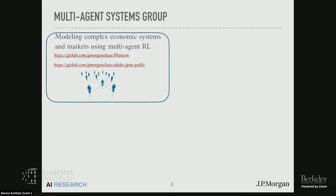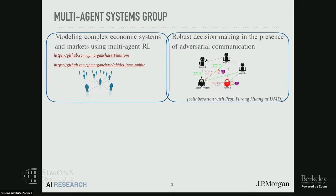Besides modeling the equilibria of these systems, we are also interested in optimizing the decision-making for a single agent component in this complex system surrounded by other strategic agents. One example of a project in this category is a collaboration with Professor Farong Wang at University of Maryland, where we looked at creating defenses against test time attacks on policies that are largely launched through communication channels.